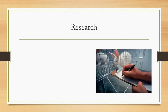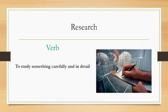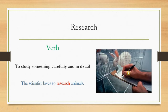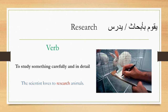Research. Research is a verb — a fi'l. It means to study something carefully and in detail. For example, the scientist loves to research animals. In this picture, he is studying the habits of the rabbit — is the rabbit moving, jumping, does he eat food right away, does it share the food? He is researching the rabbit. In Arabic you can say yaqoom bi-abhaath or yadrus.